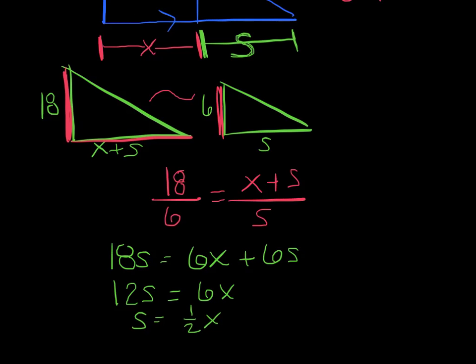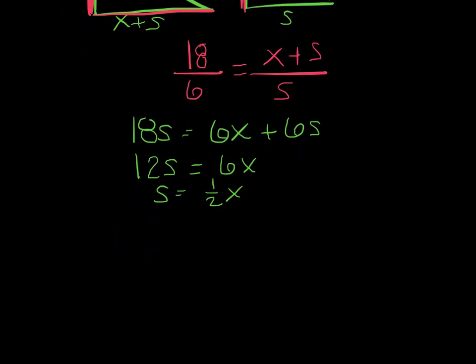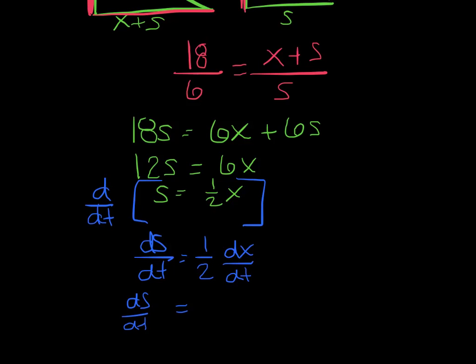Now, remember, I was finding ds/dt. So I'm just going to take this guy's derivative and just take note. Again, I'm taking it with respect to time. So unless you see the letter t, everybody gets a d variable dt. So I've got ds/dt equals 1/2 is just a coefficient dx/dt.